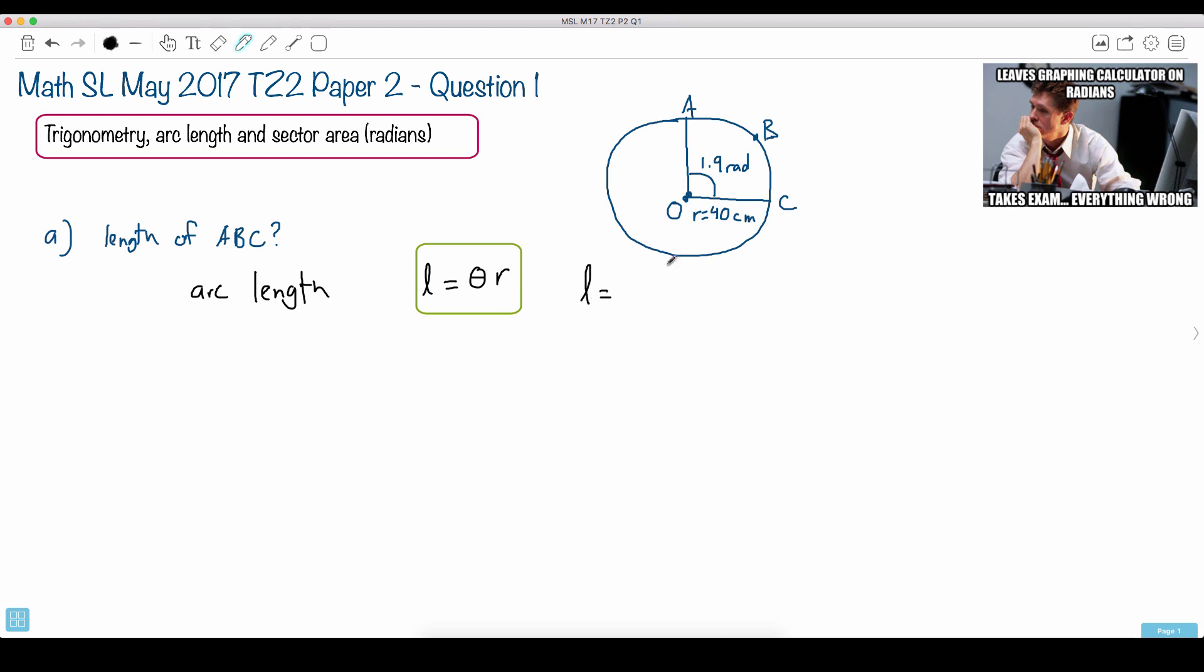We just go L equals theta, which in this case is just 1.9. This equation only works if your angle is in radians, so that's why this is indeed in radians. And then R is the radius, which is 40.